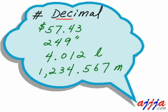So right here, $57.43 — that's a decimal number. What about 249 inches? That's a decimal number. 4.012 liters — also a decimal number. And 1,234 — decimal number as well.